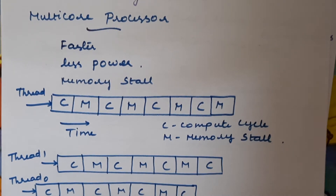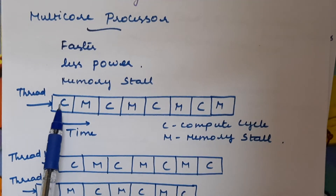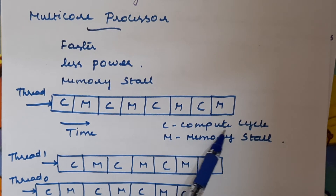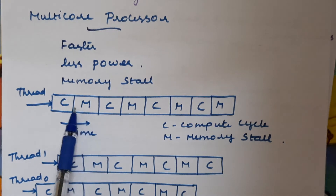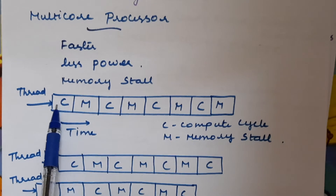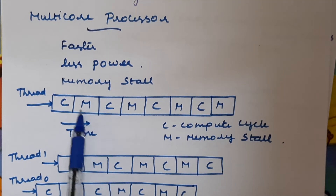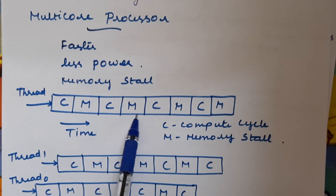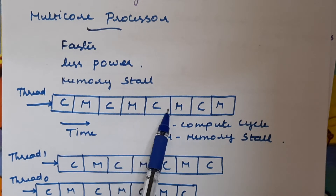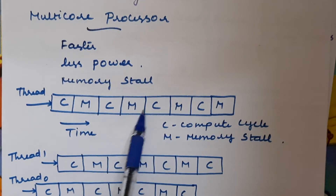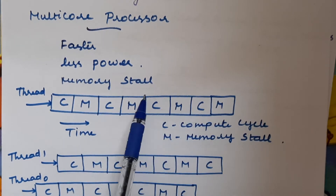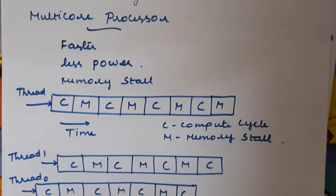In a single-threaded multi-core processor, each process holds only one thread. Here, C represents computation time — execution done by the CPU — and M represents memory stall. The CPU executes, then waits for data to be accessed from memory, then executes again, then stalls again waiting for data. As a result, fifty percent of the time is wasted accessing data that is not immediately available in memory. That is memory stall — fifty percent of time is spent in memory stall.